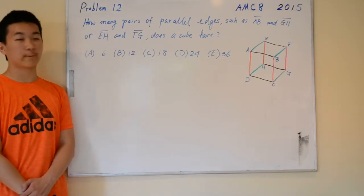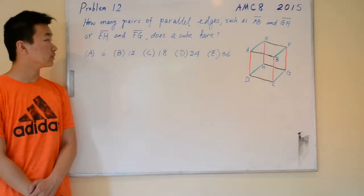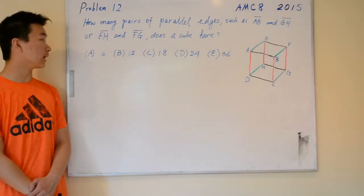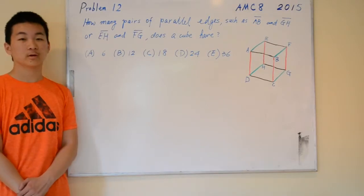So the problem reads, how many pairs of parallel edges such as AB and GH or EH and FG does a cube have?